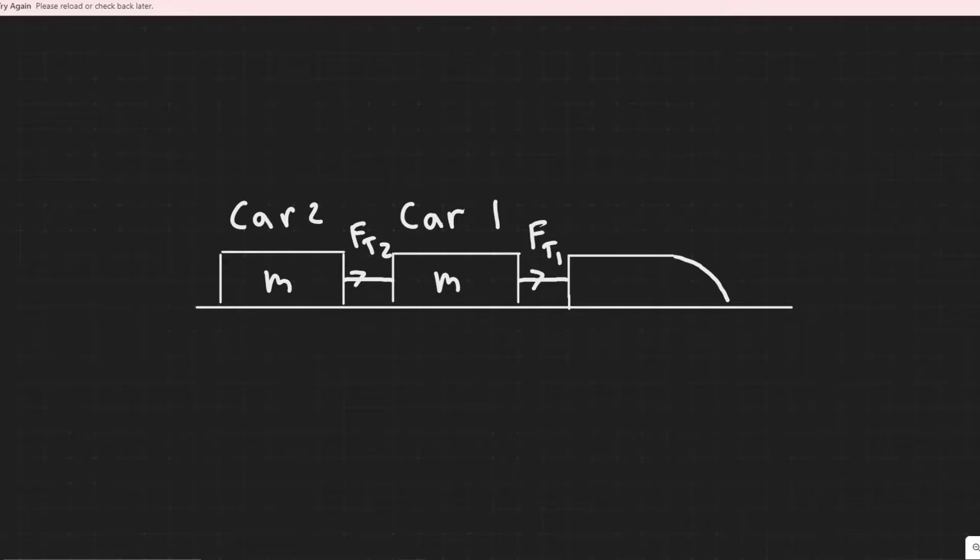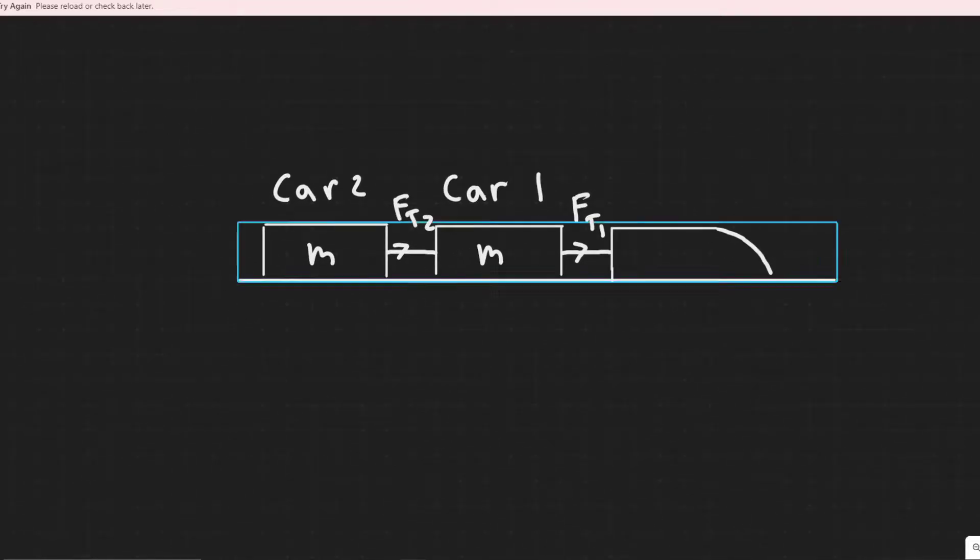So in order to solve this problem, the first thing you should do is just draw the free body diagram for each of the cars here. So we know we have Mg going down on each of the cars, right, the force due to gravity. We have the normal force acting upwards for both of them, right, that's perpendicular to what they're on.